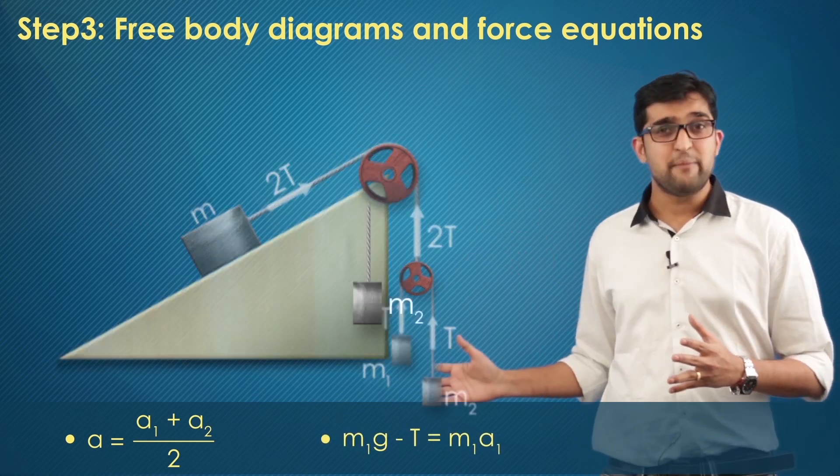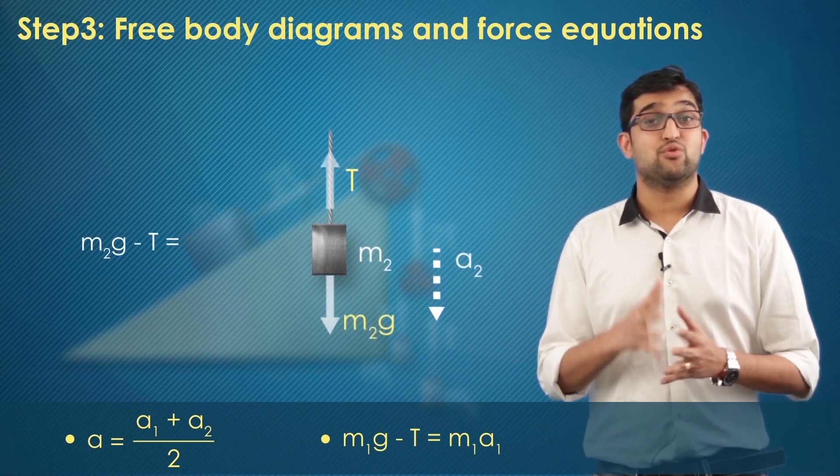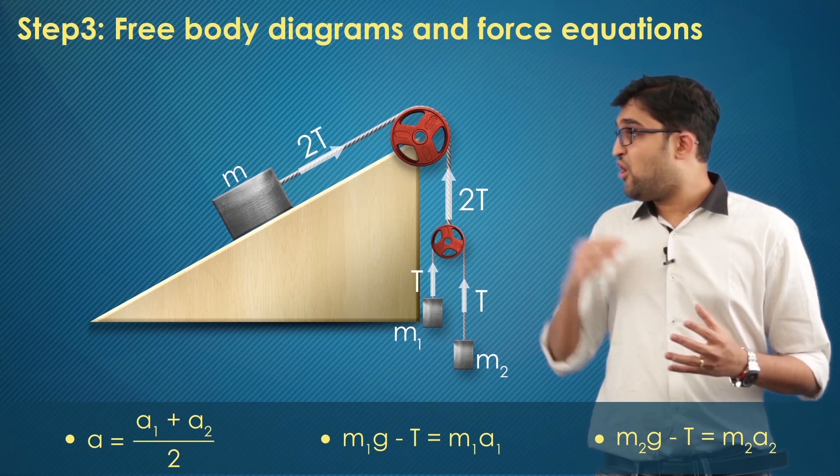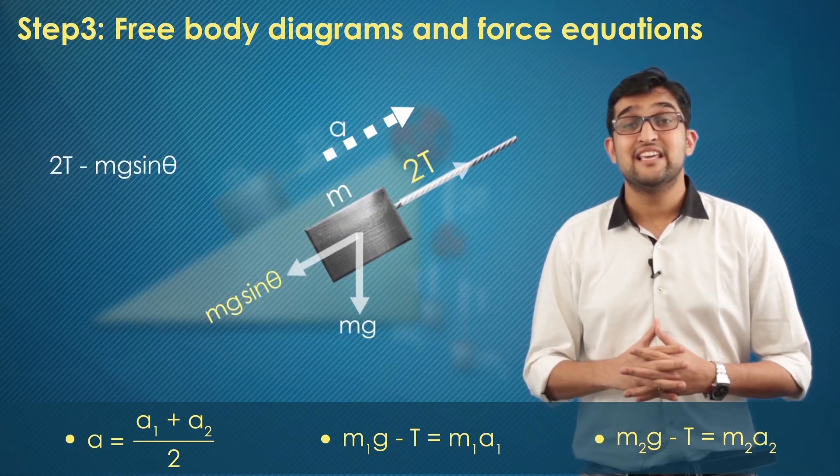Now let's move on to the FBD of M2. There the expression will be M2g minus T equals M2a2. Now move on to the FBD of the M here. You get 2T minus Mg sin theta equals Ma.